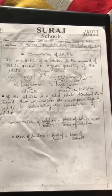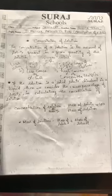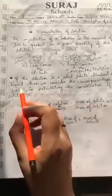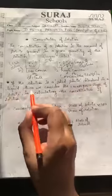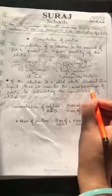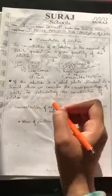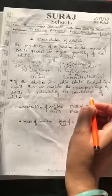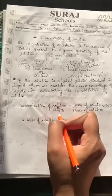Now, how to calculate the concentration of solution. The first case is when the solute is a solid dissolved in a liquid — then we consider the mass percentage. The mass percentage is used to calculate the concentration of solution in this case.